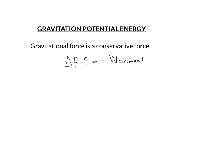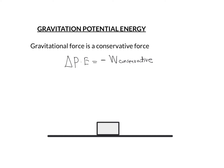Negative of work done by a conservative force equals the value of change in its potential energy. Here we are going to find out the change in gravitational potential energy — not the exact value of gravitational potential energy, which we will discuss in the chapter on Gravitation. Now let us see how to find the value of change in gravitational potential energy.